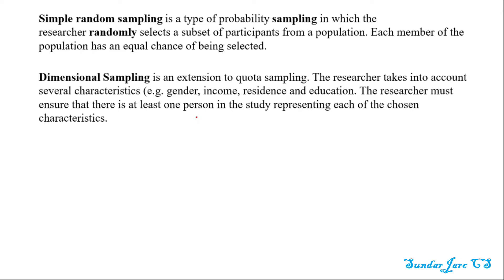Dimension sampling is an extension of quota sampling. The researchers take into account several characteristics: gender, income, residence, and education.